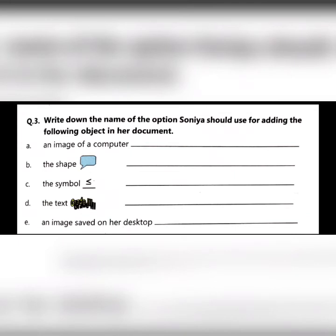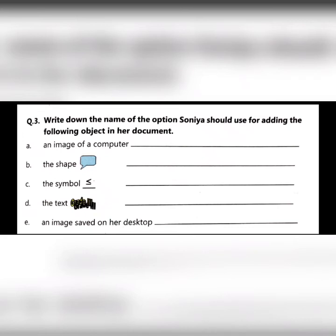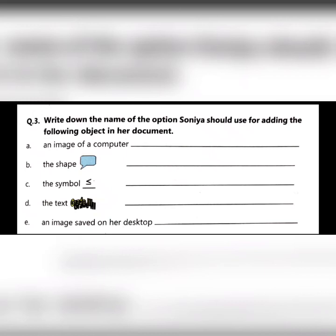Question number three: write down the name of the option Sonia should use for adding the following objects in her document. A — An image of a computer: Gallery. B — A shape: Shapes. C — A symbol, mathematical symbol: from Special Characters. D — The text 'Grade 3': from Fontwork Gallery. E — An image saved on her desktop: from File.